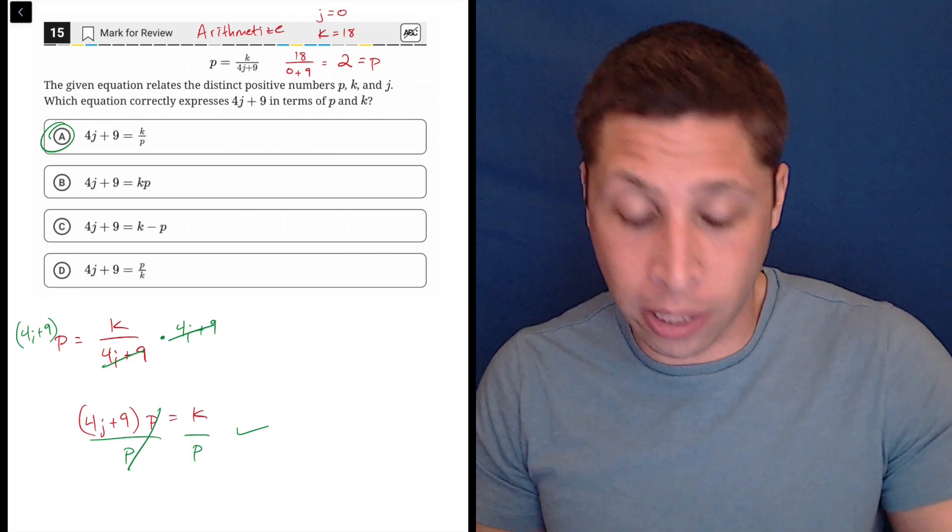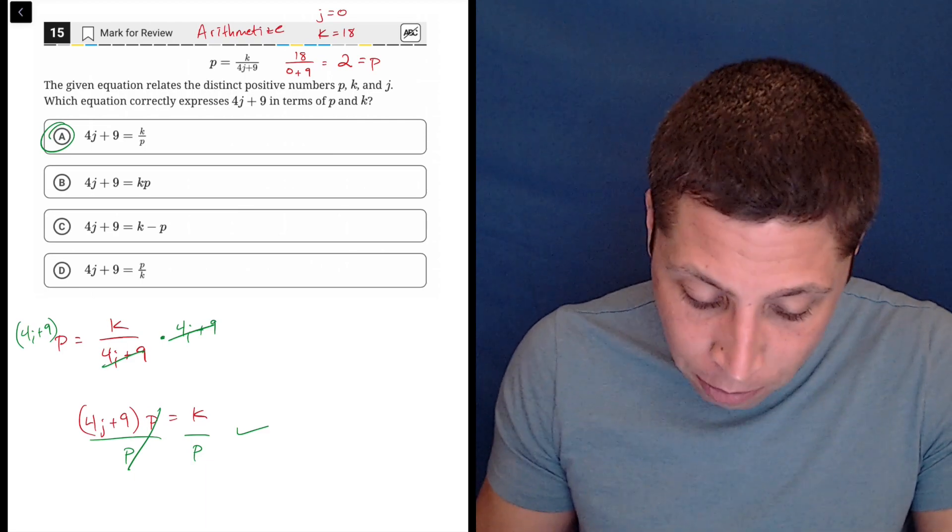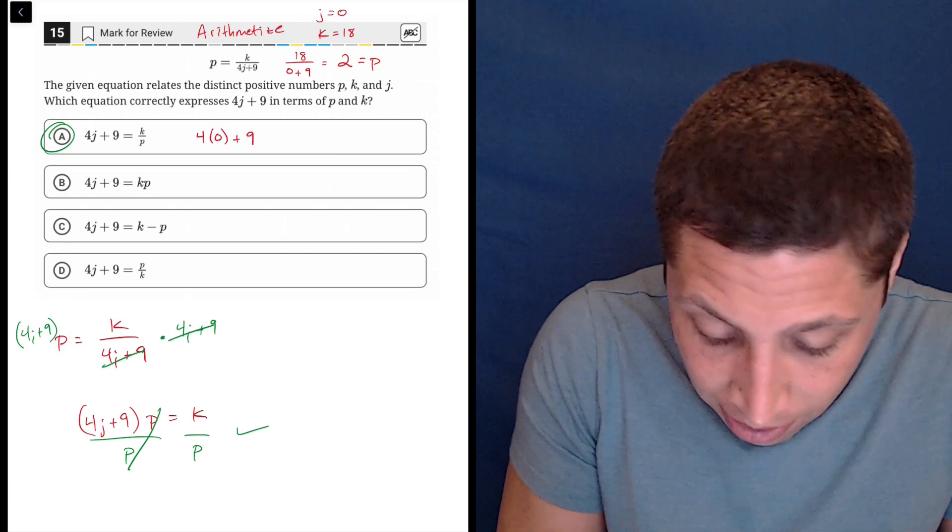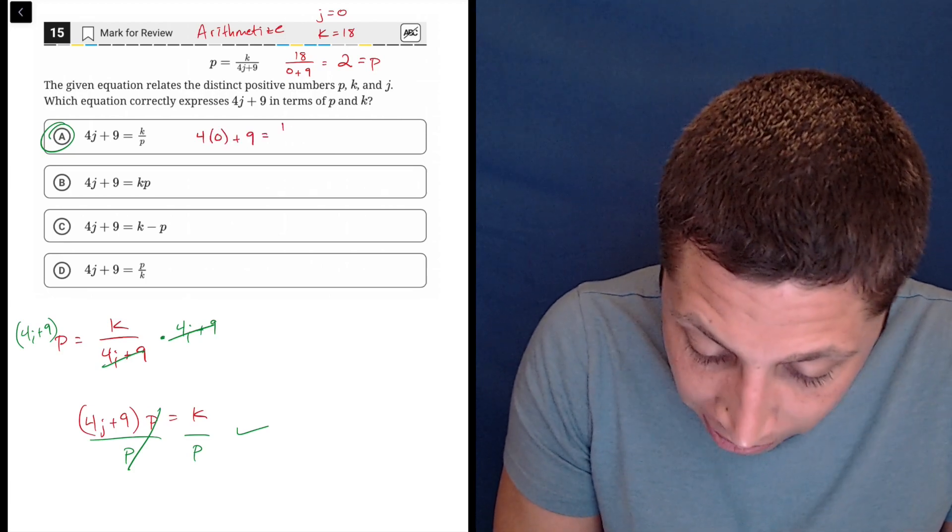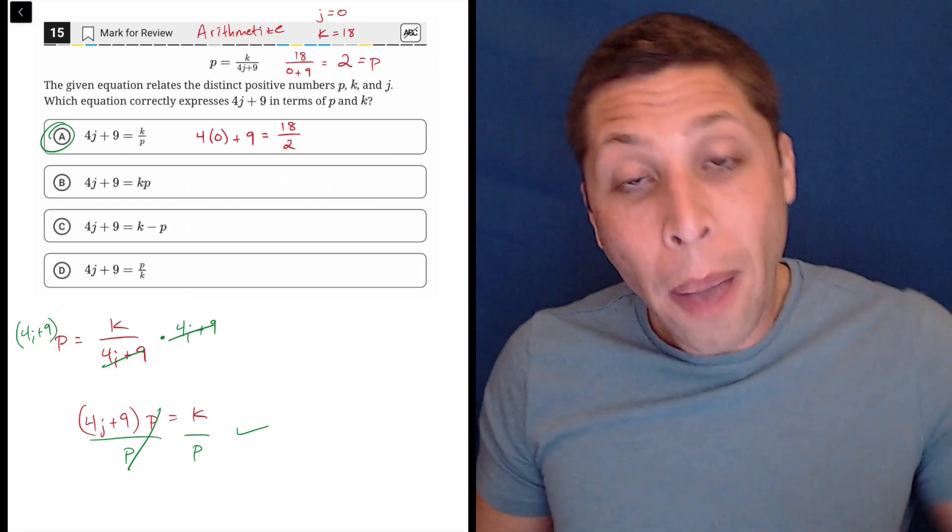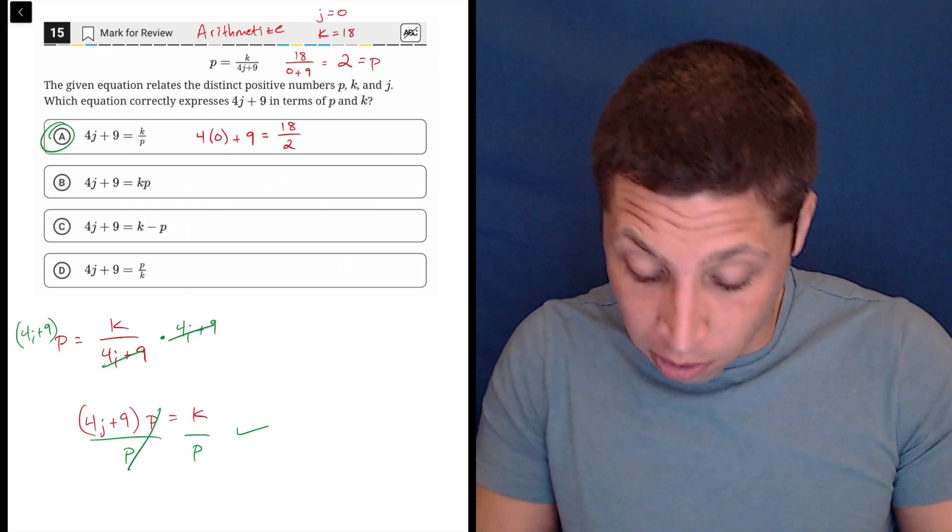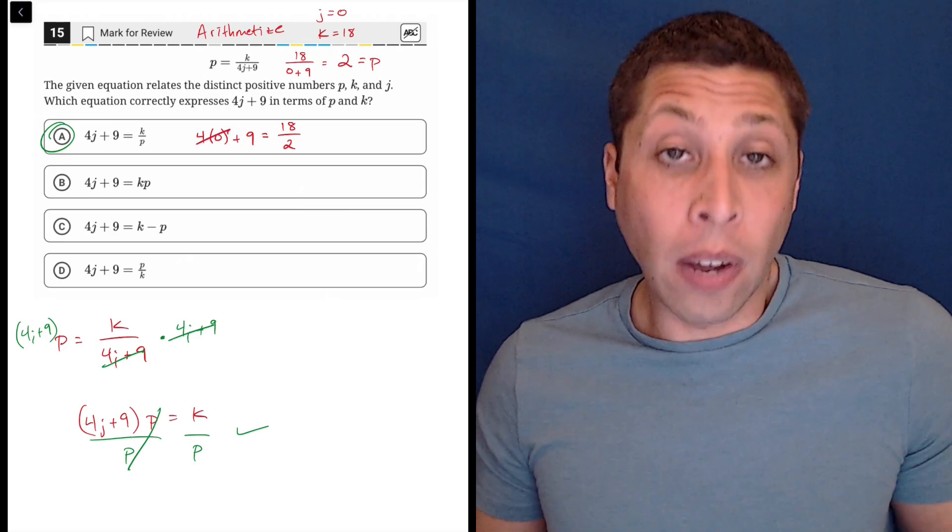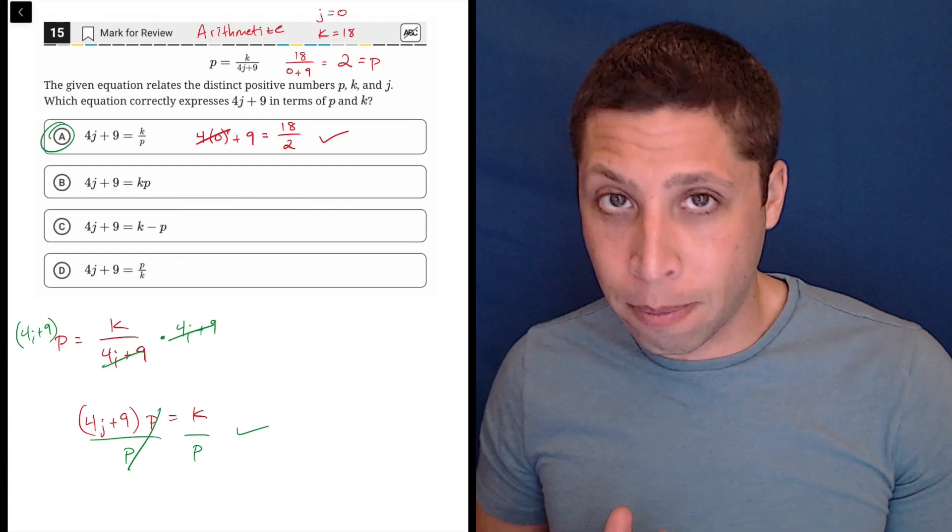If they don't, then it's not an equivalent expression. So we know A is right, but let me just show you. If we did 4 times j is 0 plus 9 equals k over p, so that's 18 is k and p is 2. Well that makes sense, because 4 times 0 is 0, 0 plus 9 is 9, and 18 divided by 2 is 9. So this is a valid statement.